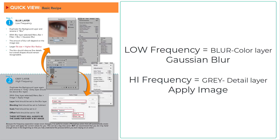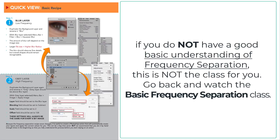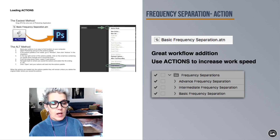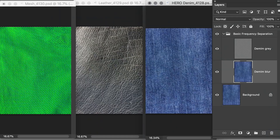I don't like the terms 'low frequency' and 'high frequency' — my brain doesn't deal with them well. So the gray layer is the high frequency where the detail lives. This presumes you understand basic frequency separation — if you don't, stop now and come back later. Loading the actions is easy: either drag the action to the icon for your application or go through the menu and load actions.